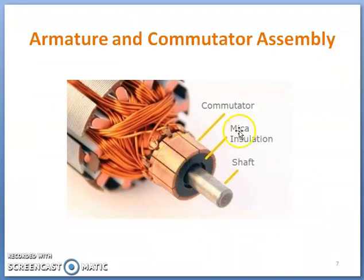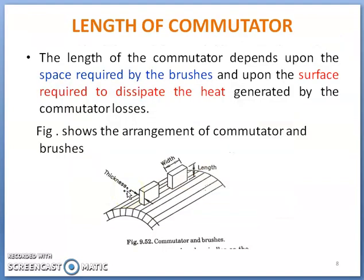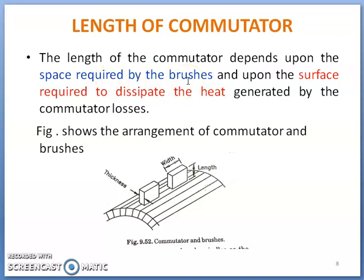All armature coils are connected to commutator segments via risers. The length of the commutator depends upon two factors: the space required by the brushes, and the surface required to dissipate the heat generated by the commutator losses. The dimensions of the brushes depend upon the rating of the machine.